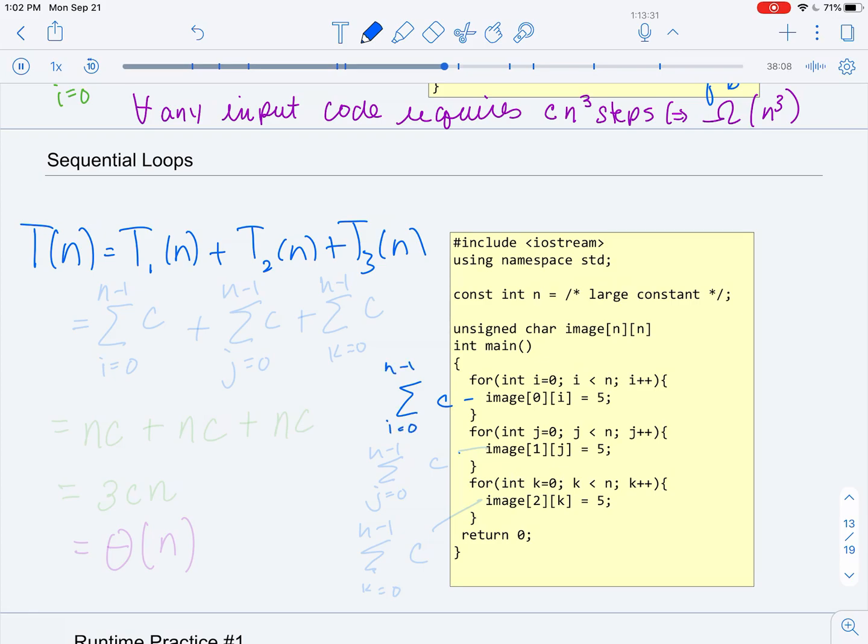And then constant amount of time, and then the summation for the index, and then finally the constant amount of time and the summation for the index. So the key point is when we have sequential loops, we just add the amount of work done for each loop.